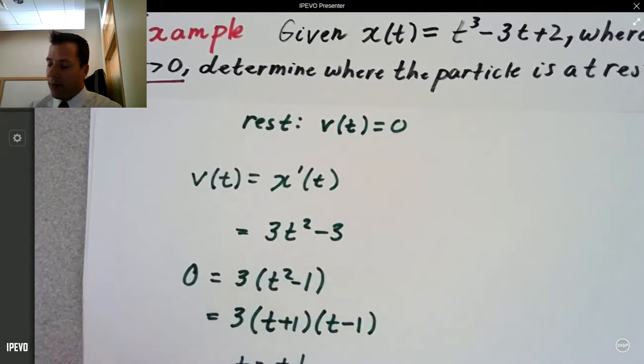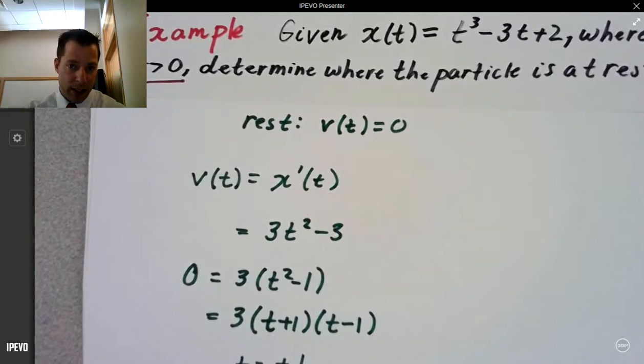The t is at 1. After one second, the particle's at rest. Why? Because the velocity is 0. So if you have any questions or comments on how to find where a particle's at rest, go ahead and type them below. We'll see you next time.